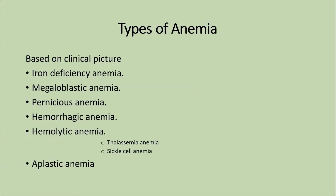Types of anemia based on the clinical picture include iron deficiency anemia, megaloblastic anemia, pernicious anemia, hemorrhagic anemia, hemolytic anemia, thalassemia, sickle cell anemia, and aplastic anemia.